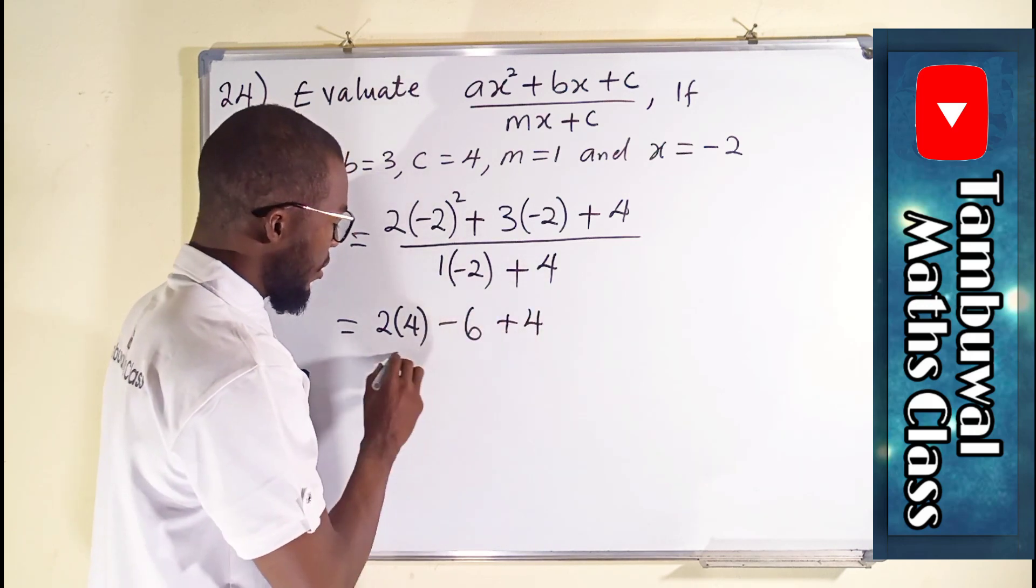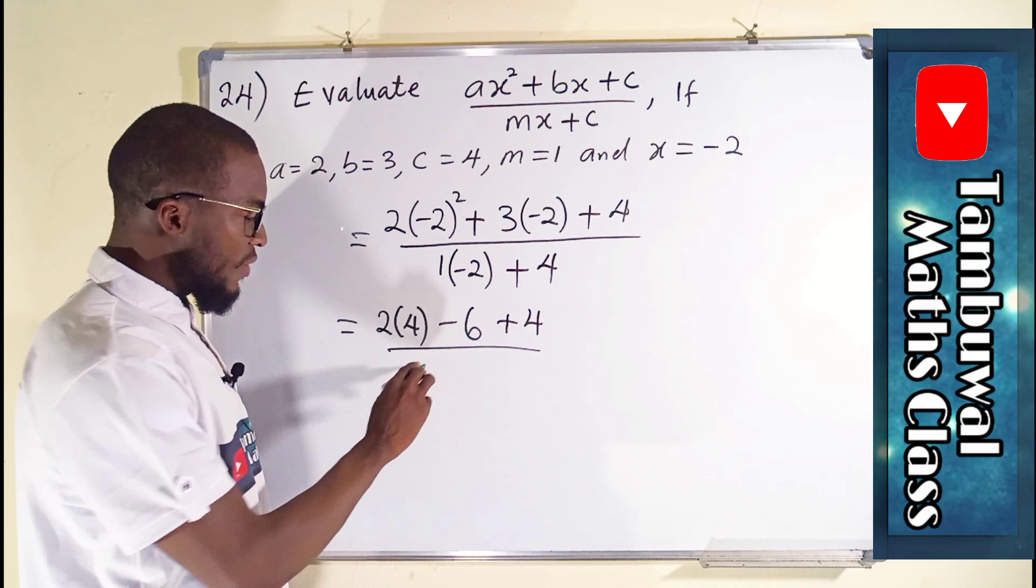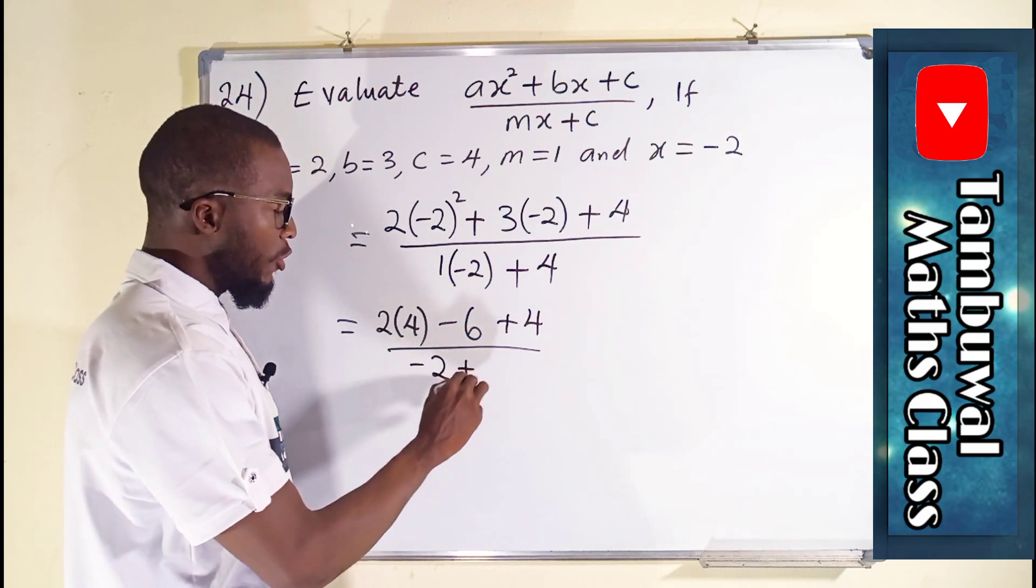All over 1 times negative 2 is negative 2, plus 4.